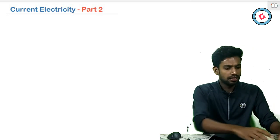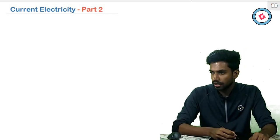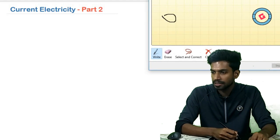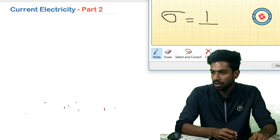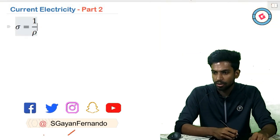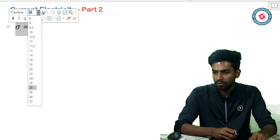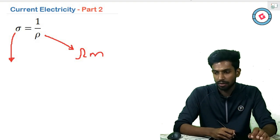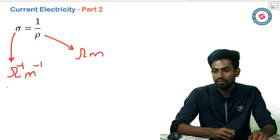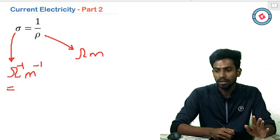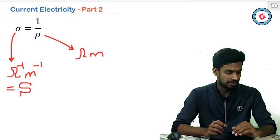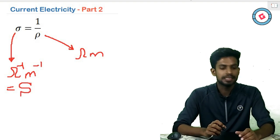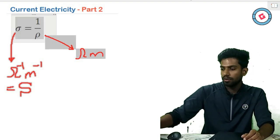Electrical conductivity, symbolized by sigma (σ), is simply the reciprocal of electrical resistivity: σ = 1/ρ. Since rho is measured in ohm·meters, sigma is measured in per ohm per meter. We give this unit a special name — it is called the siemens, denoted by capital S. So electrical conductivity is measured using siemens.